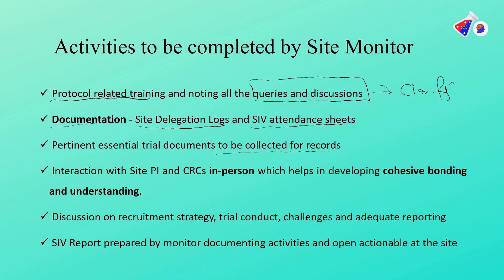Pertinent essential documents need to be collected for records, including any pending investigator CVs, lab accreditation certificates, or calibration certificates. One of the most critical activities is in-person interaction with the PI and CRC, because meeting in person allows you to understand their perspective clearly and helps develop a cohesive bond. Since 90% of the time you communicate through emails and phone calls, making a good first impression with the site and principal investigator is essential for conducting the clinical trial as smoothly as possible.